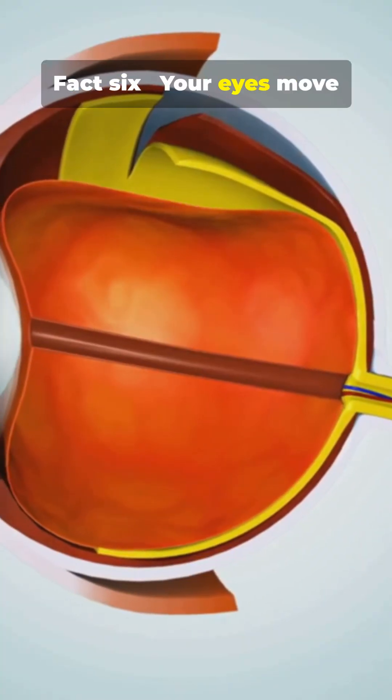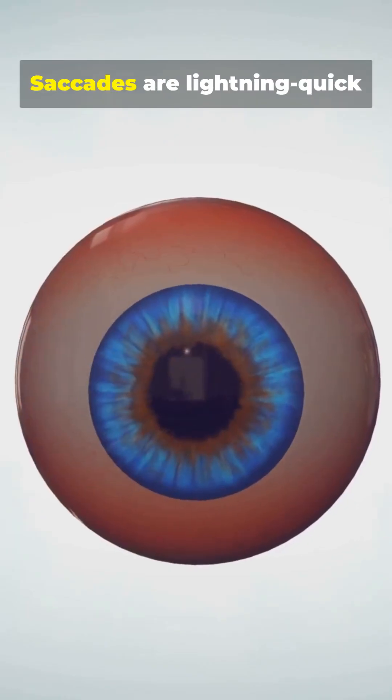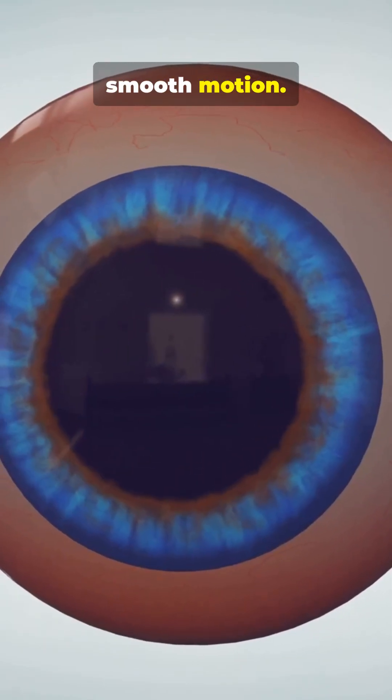Fact 6. Your eyes move faster than you think. Saccades are lightning quick jumps. Your brain stitches them into smooth motion.